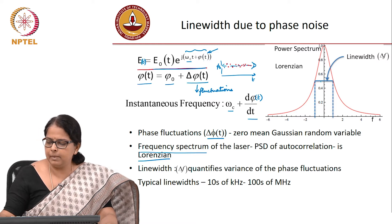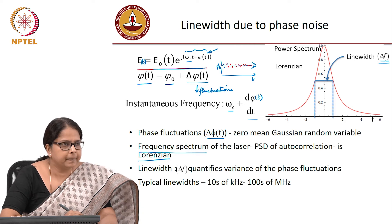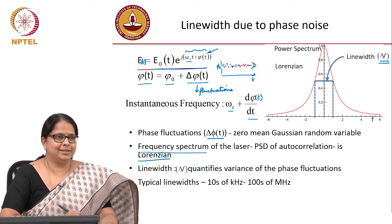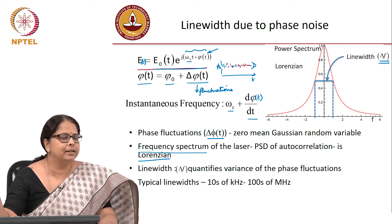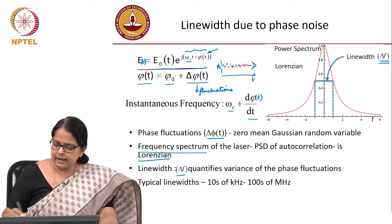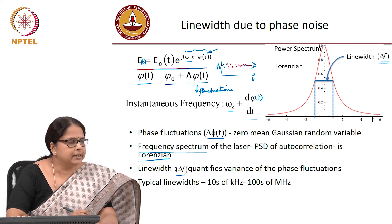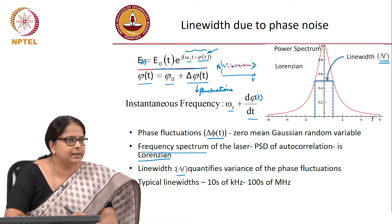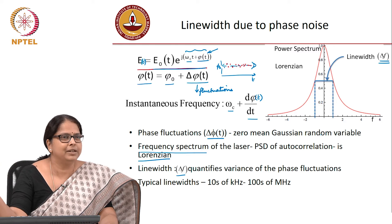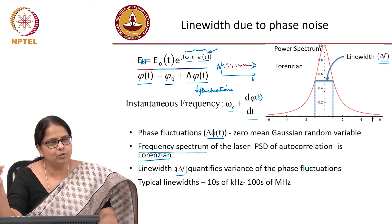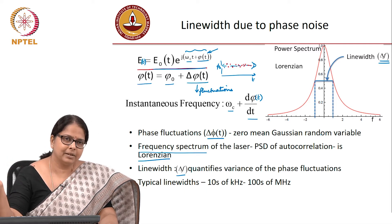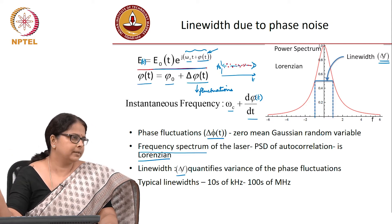The 3 dB bandwidth of that Lorentzian function is what we call the line width of the laser. This concept is relevant only for a single longitudinal mode laser — if multiple longitudinal modes are supported, line width has no relevance. The line width Δf is measurable, whereas φ(t) as a Gaussian random variable is not easily measurable. The spectrum of the laser is what relates phase noise to a measurable quantity.